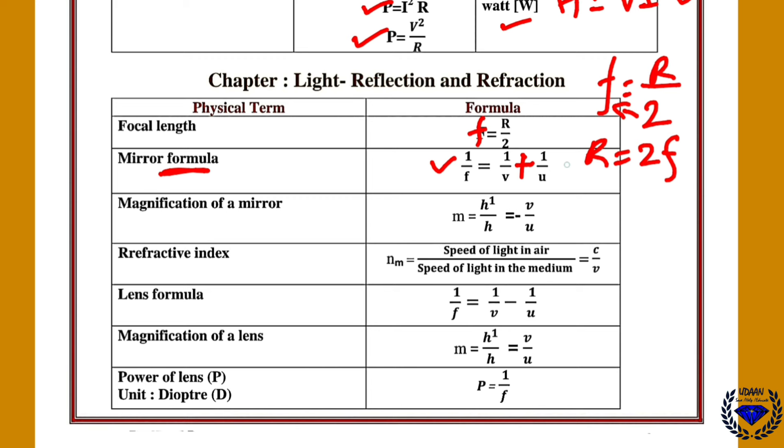Then mirror formula. See in mirror formula you should use plus sign. 1 upon f is equal to 1 upon v plus 1 upon u. Here v is image distance and u is object distance. Similarly magnification of mirror is M is equal to minus H dash by H, that is image height by object height or minus v by u.